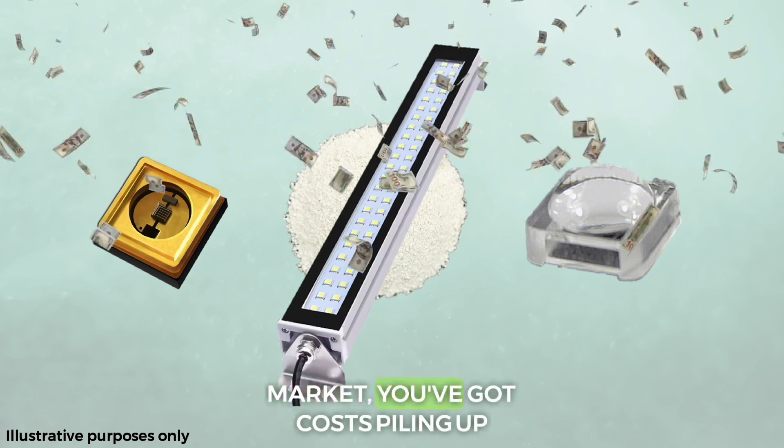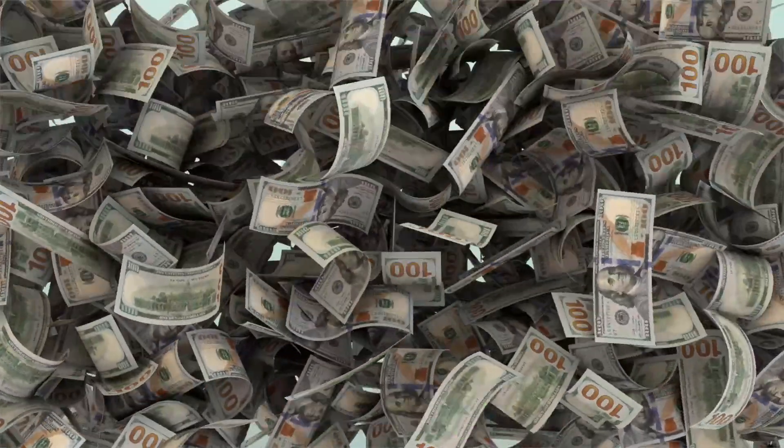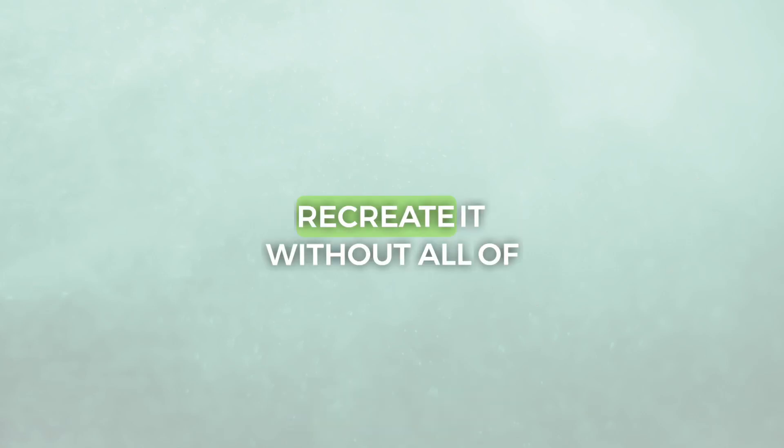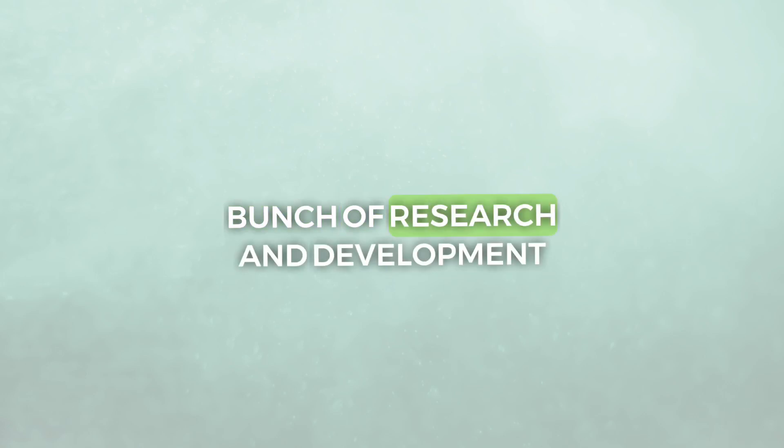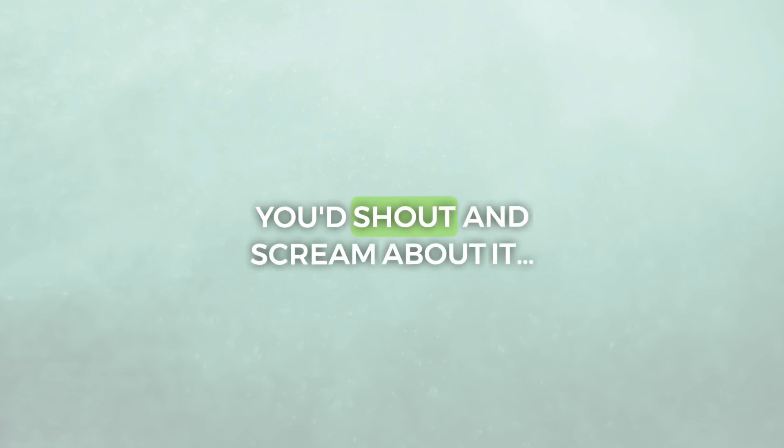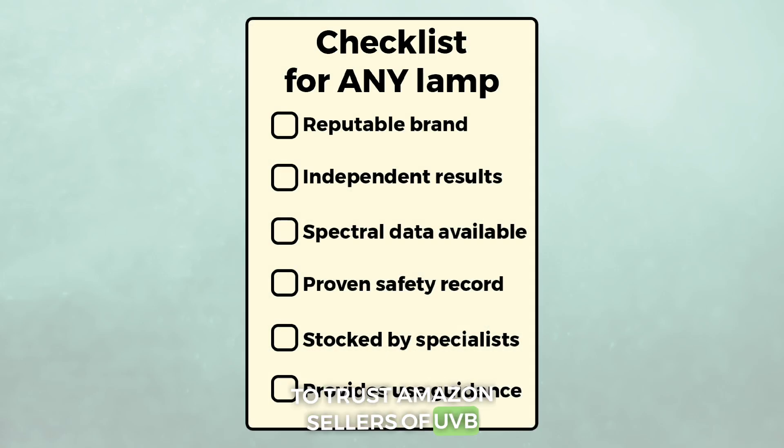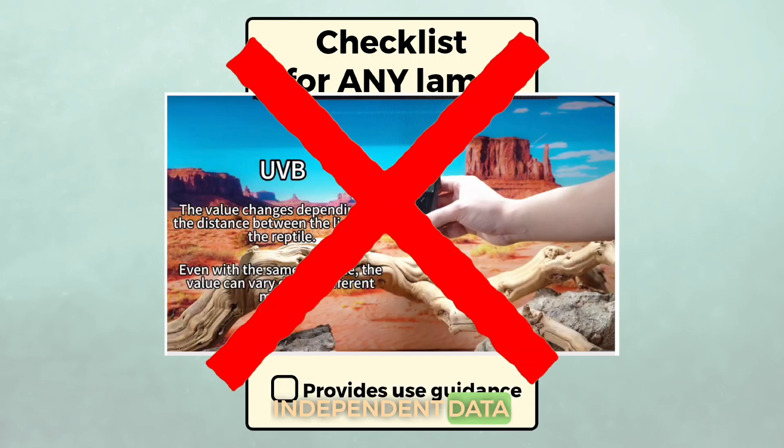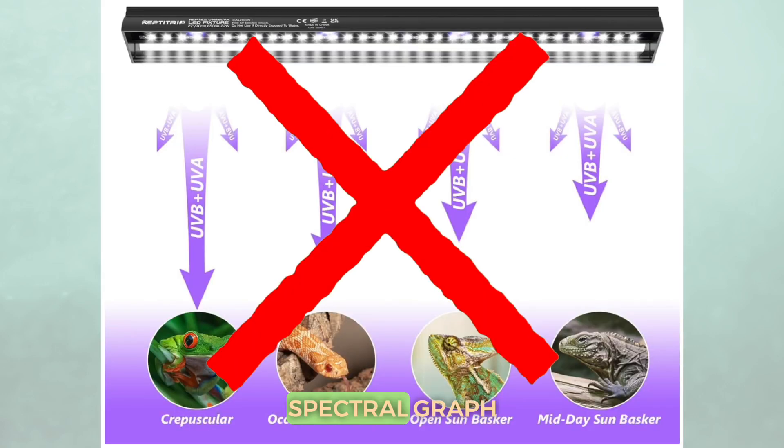Before the lamp even goes to market, you've got costs piling up. And then when it comes to market, another company can very easily tear down your design and recreate it without all of those startup costs. You think if you'd put a whole bunch of research and development into making your UVB LED lamp safe, you'd shout and scream about it. This is the reason enough not to trust Amazon sellers of UVB LED lamps where there isn't independent data, a dedicated website, or even a spectral graph.